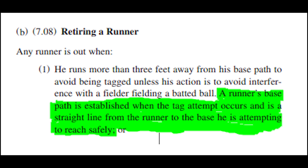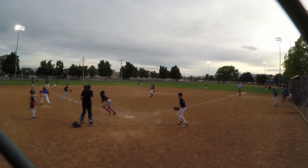As seen in Rule 5.09b1, a runner's base path is established when a tag attempt occurs, and is a straight line from the runner to the base he is attempting to reach safely. What this means is that there is no base path until the tag attempt is made.